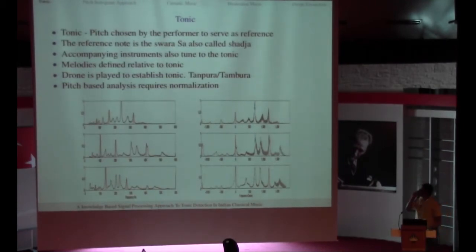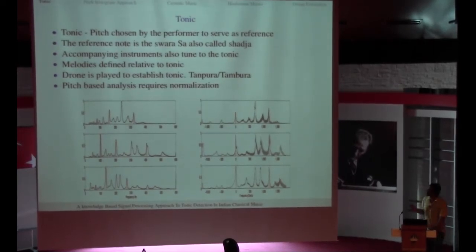So what is this tonic I am trying to estimate? Tonic is generally the pitch chosen by the performer to serve as the reference. This is the Swarasa or also we call it the Sajja throughout. The accompanying instruments always tune to a tonic used by the lead performer. The performer chooses it so that it matches with his vocal range. The melodies performed in a concert are all relative to the tonic. To establish the tonic they use a drone instrument to set the tonic.